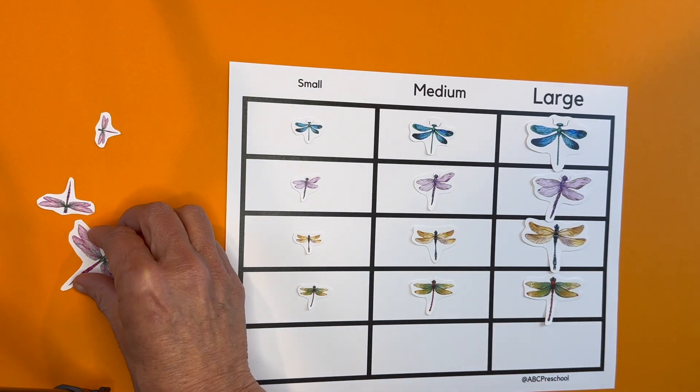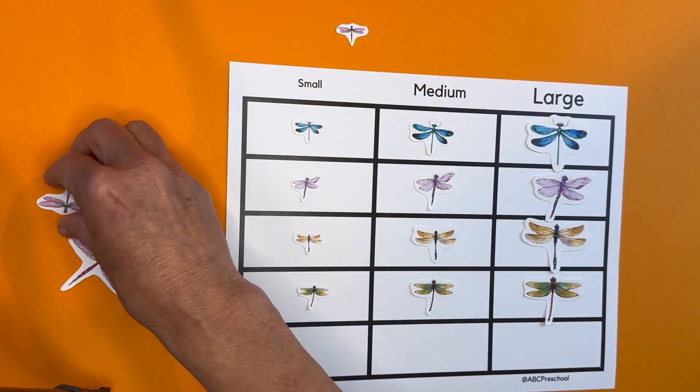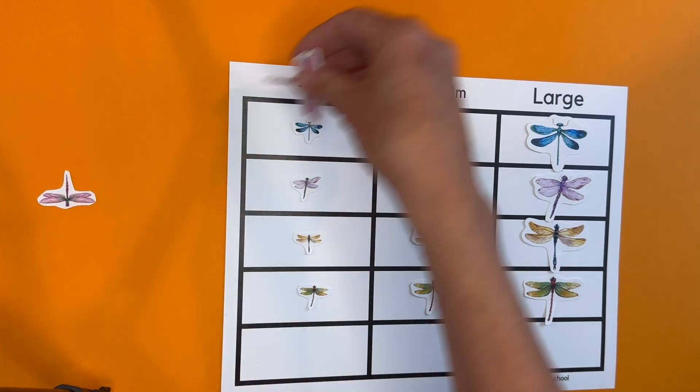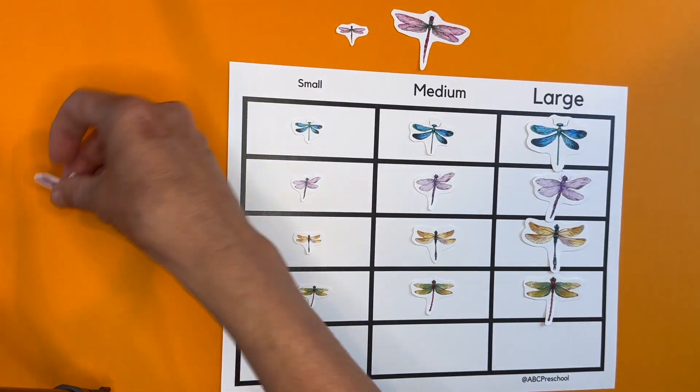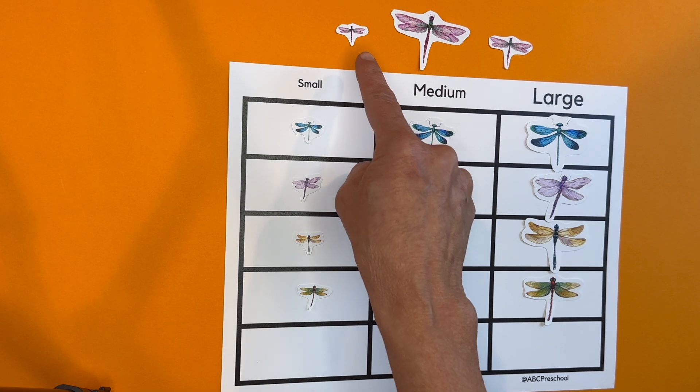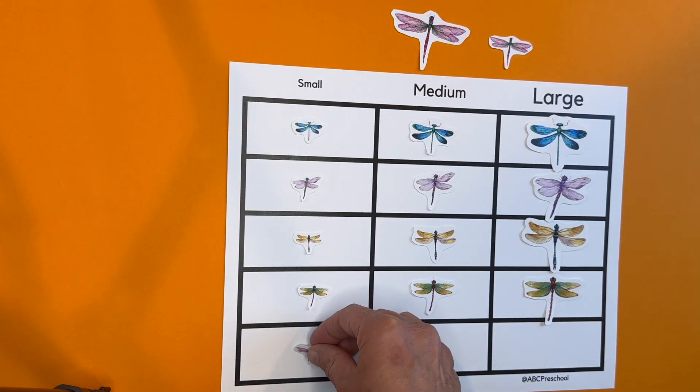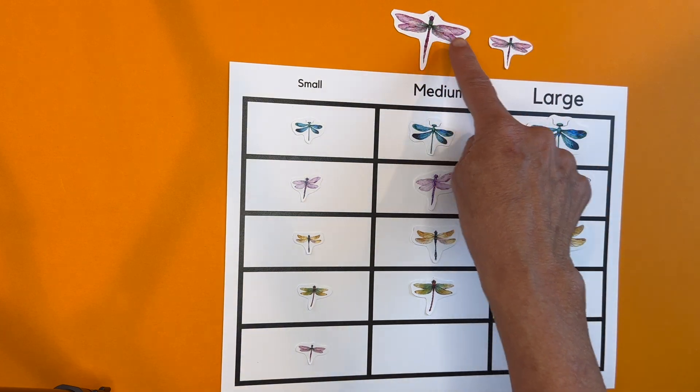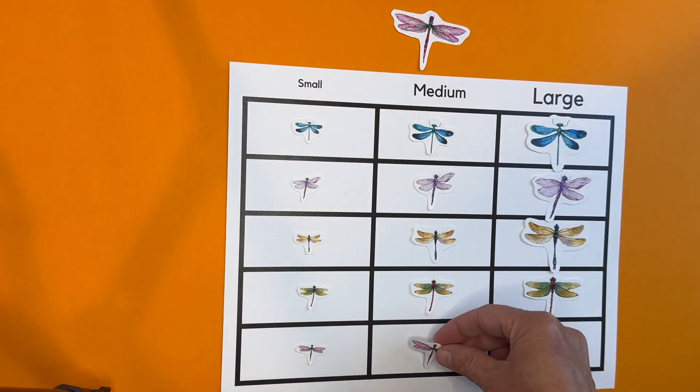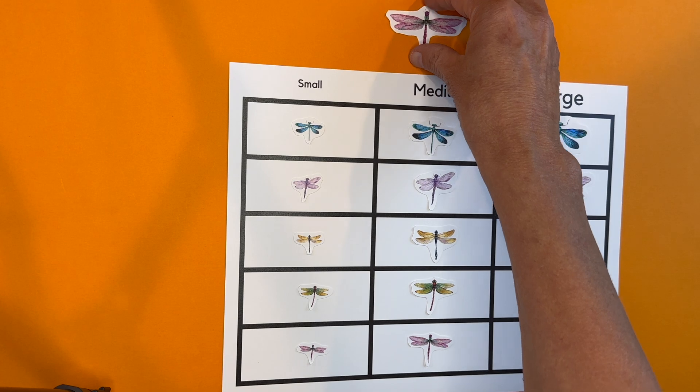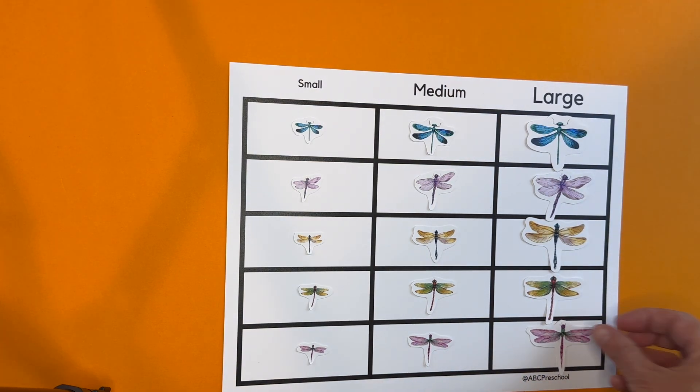And then finally, we'll do the pink ones. Okay, so let's bring them over. Okay, there we go. The little pink family. Okay, small, right here. Medium, right here. And large. We did it. Look how great that looks.